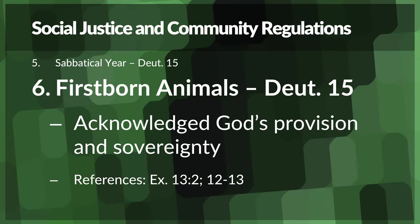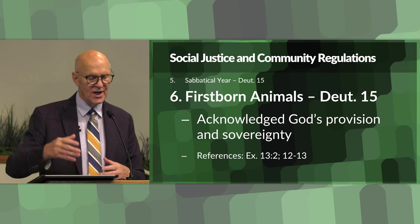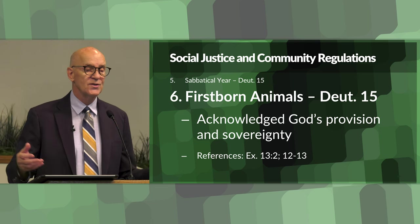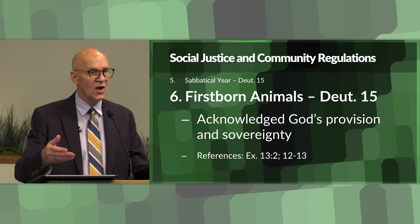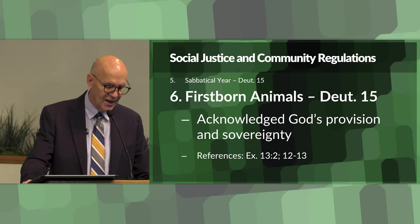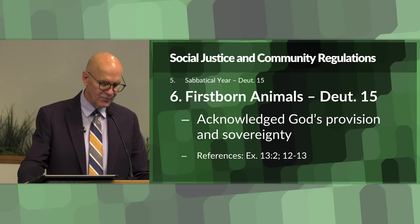Another item in this social justice and community regulations area was the law about firstborn animals in Deuteronomy 15. The firstborn of livestock was dedicated to God. The purpose was to acknowledge God's provision and sovereignty - God is the one that gave everything to you that you had. And so the firstborn of your livestock you would offer to God in recognition of this fact. References to the firstborn animals can be found in Exodus chapter 13.